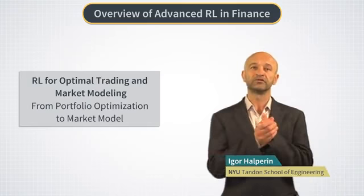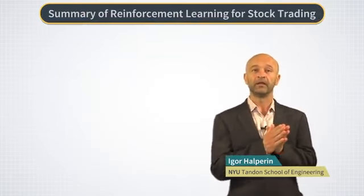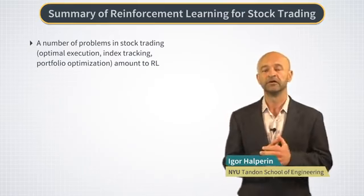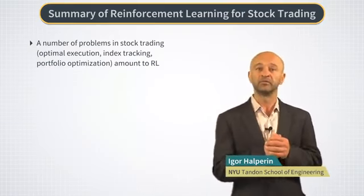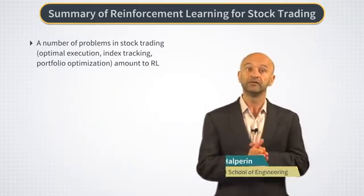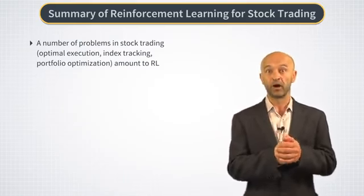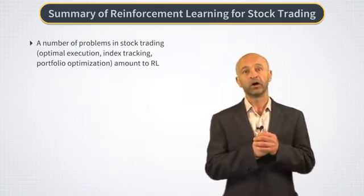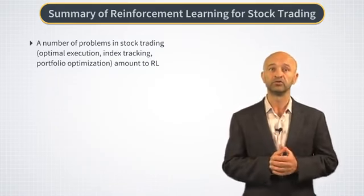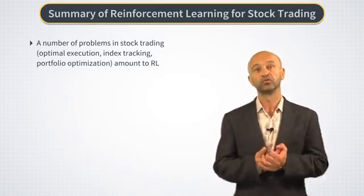We talked about this topic in the last week of our course on reinforcement learning. In that previous course we talked about how various classical problems in finance such as optimal stock trading, optimal portfolio liquidation, optimal portfolio management, and index tracking can all be solved by formulating them as problems of optimal control. And once this is done we find ourselves in a familiar terrain — we can use either methods of dynamic programming or reinforcement learning to solve these problems.